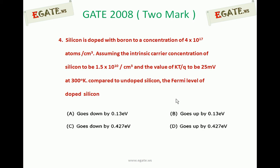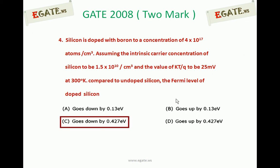Silicon is doped with boron, making it a P-type semiconductor. The acceptor concentration is 4 × 10^17 atoms per centimeter cube, the intrinsic carrier concentration is 1.5 × 10^10 per centimeter cube, and the thermal voltage is 25 millivolts at room temperature. The correct answer is C: the Fermi level of doped silicon goes down by 0.427 electron volts compared to undoped silicon.